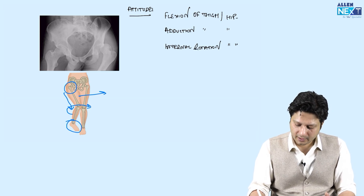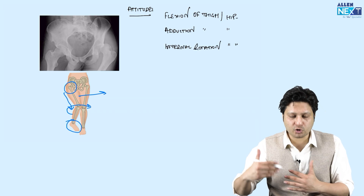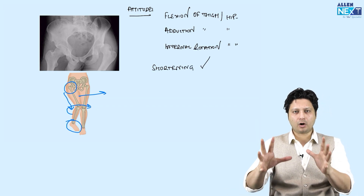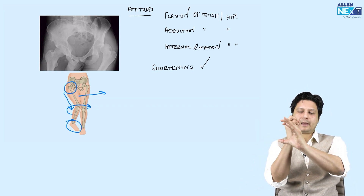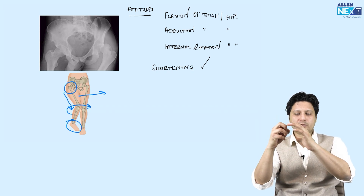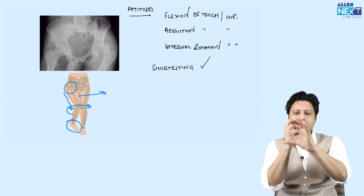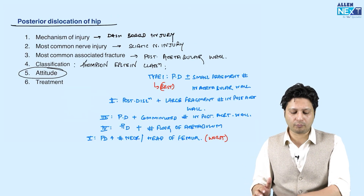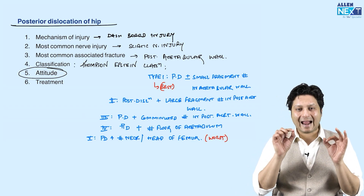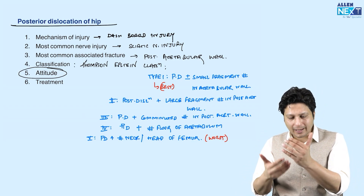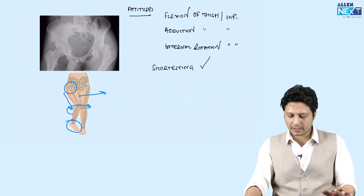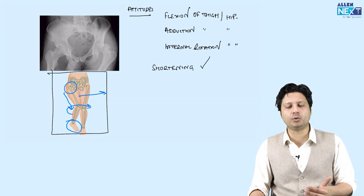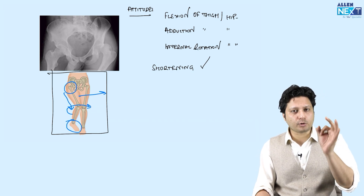There will also be shortening of the limb. When the head of the femur is out of the acetabulum, it migrates proximally. Because of this proximal migration, the head is no longer supported by the floor of the acetabulum, resulting in true shortening of the limb. So the attitude is flexion, adduction, and internal rotation associated with true shortening.